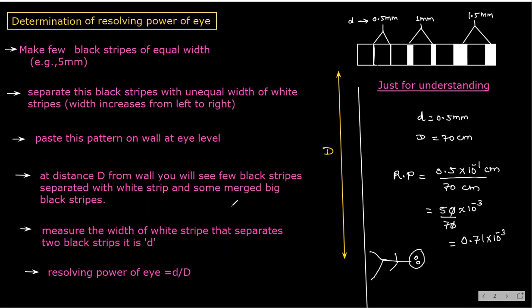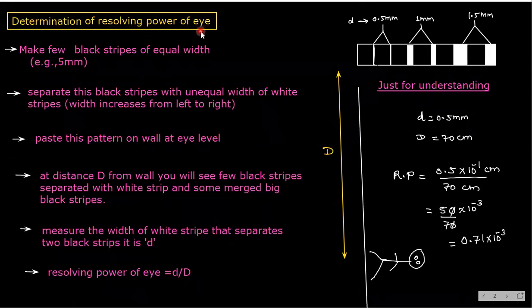Now, determination of resolving power of the eye. First, we make a few black strips of equal width. As you can see in the diagram, these black strips are separated by white strips of unequal width. For example, the first two strips are 0.5 mm wide, the next two are 1 mm, and the next two are 1.5 mm — so the width of the white strips increases from left to right.